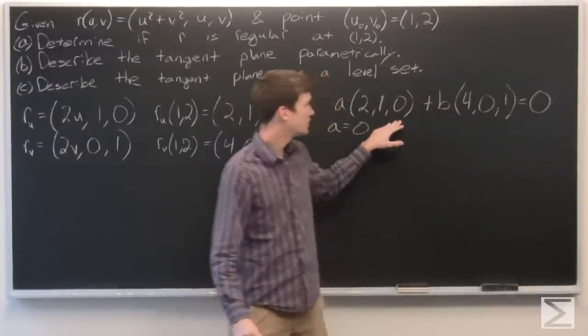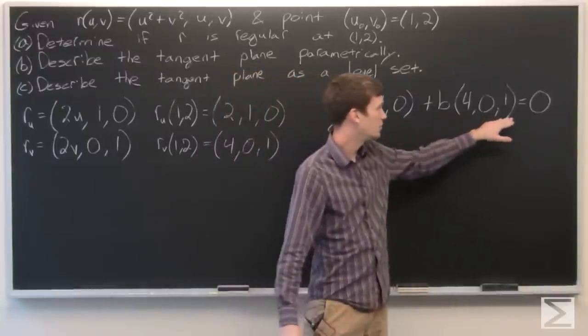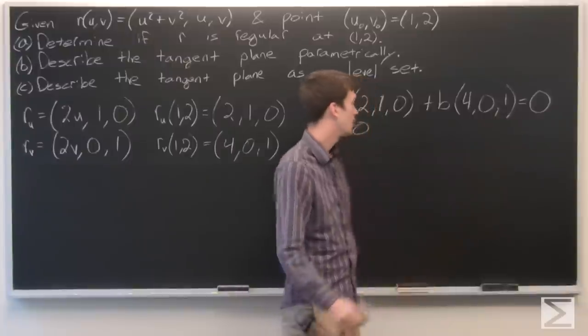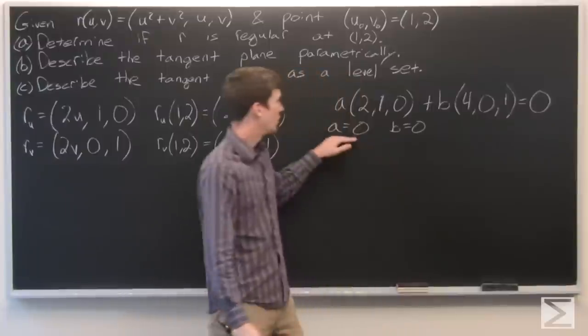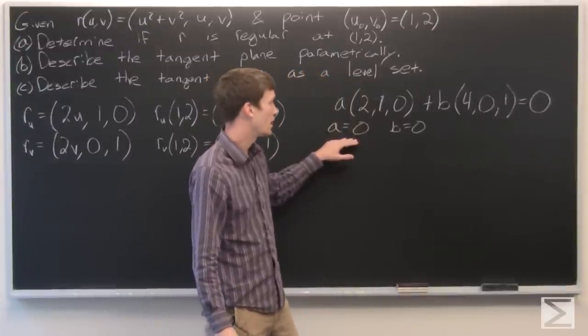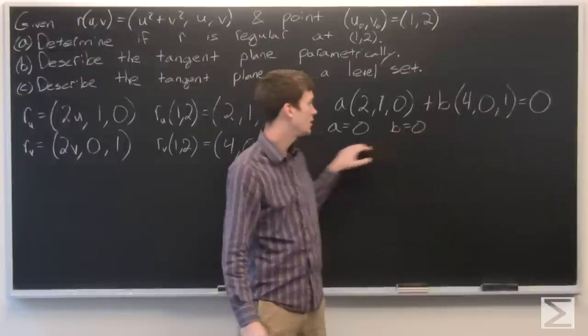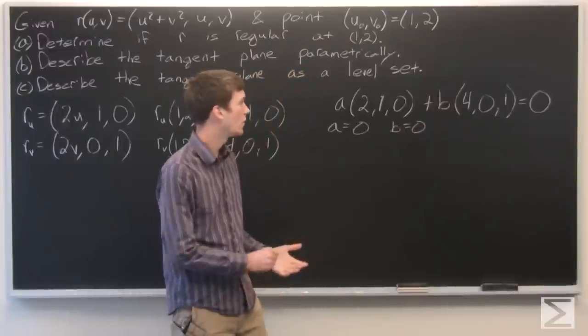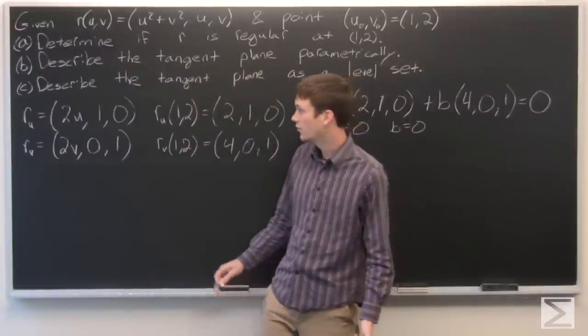And in order for the third component to be 0, we have a 0 from this term and b in the second term. So that implies that b is 0. But we want to define a and b such that they're not both 0. But in order for this to be satisfied, a and b both have to be 0. So we know that r is regular at the point 1, 2.